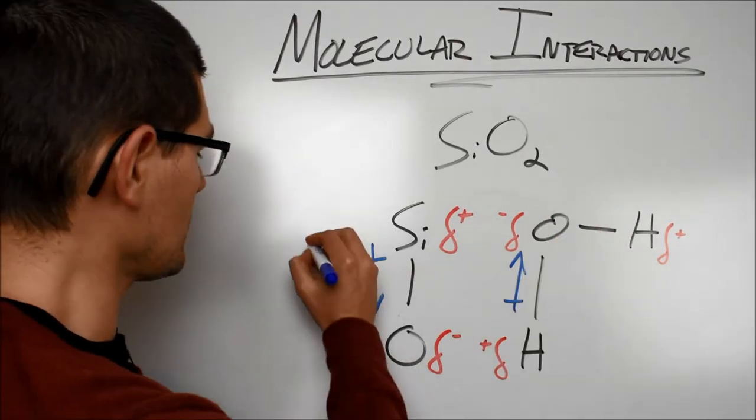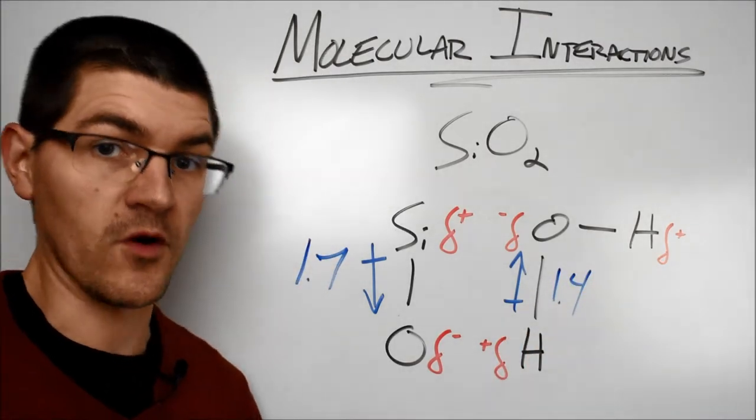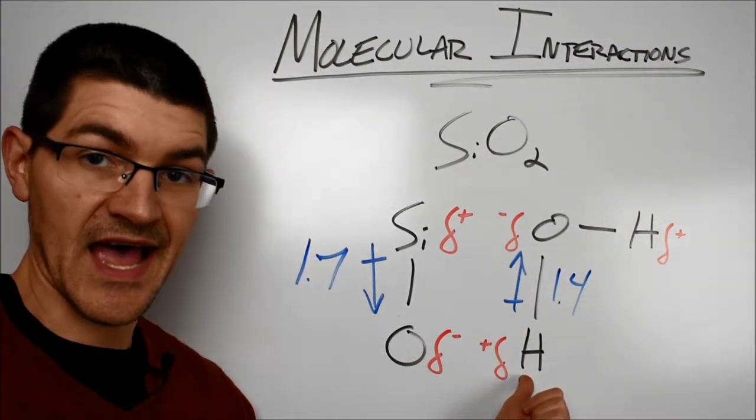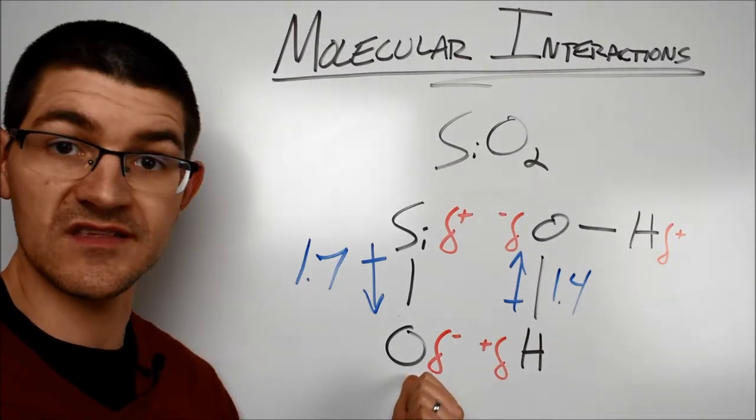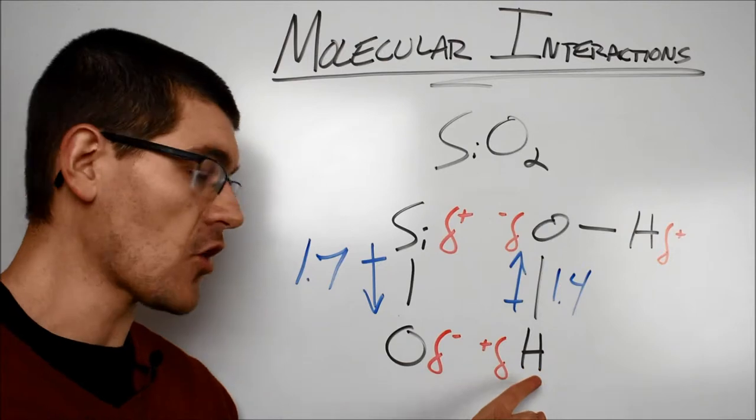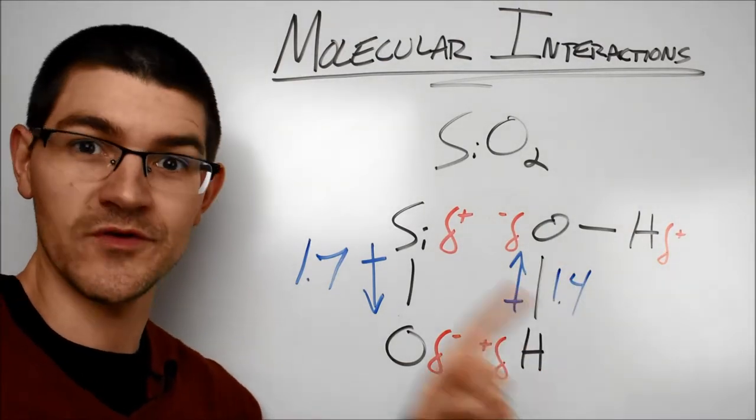Looking at our electronegativity differences, we know the difference between silicon and oxygen is 1.7, and the difference between oxygen and hydrogen is 1.4. This is why the partial positive of the hydrogen in the water would rather coordinate adhesively with the partial negative of oxygen and the silicon dioxide in the glass than it would cohesively interact with a partial negative of an oxygen in a different water molecule. Sound good?